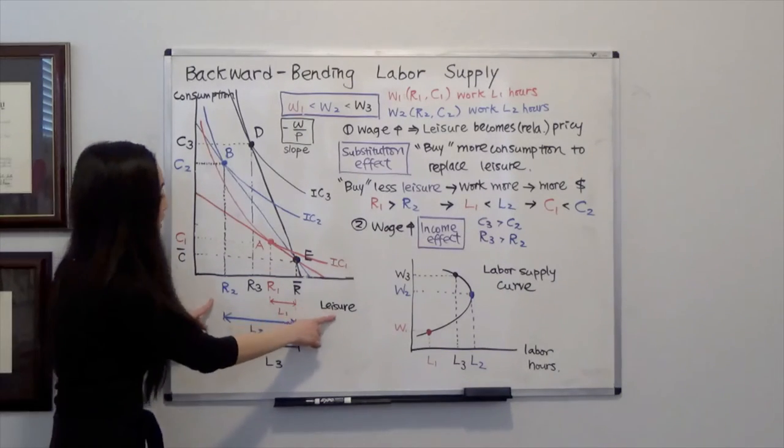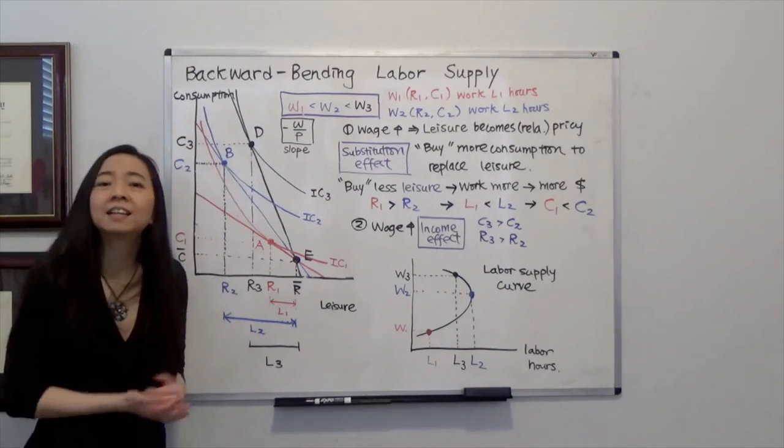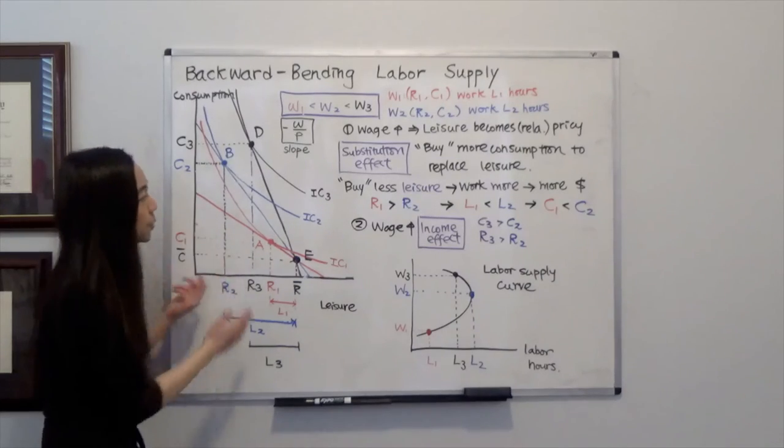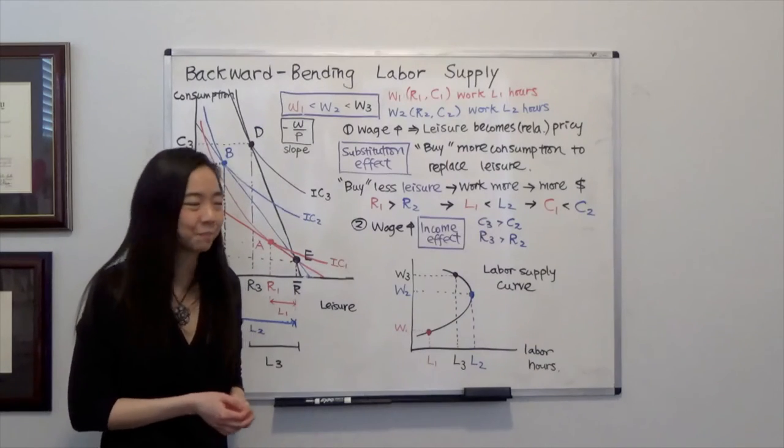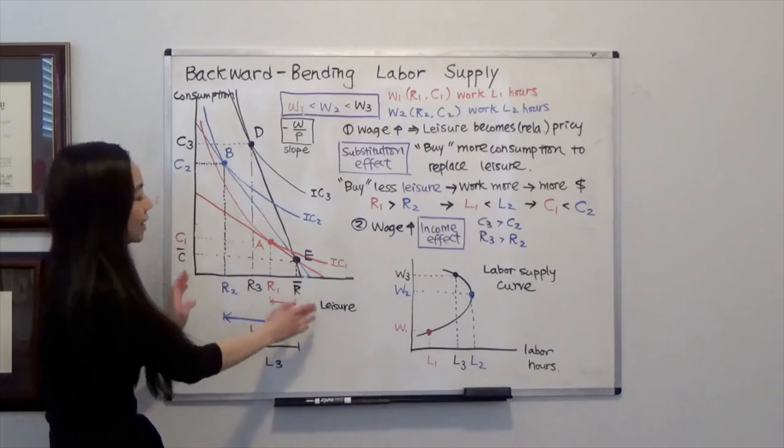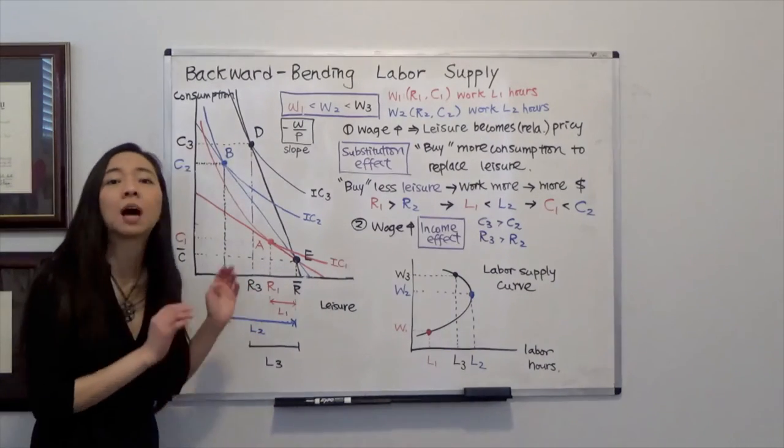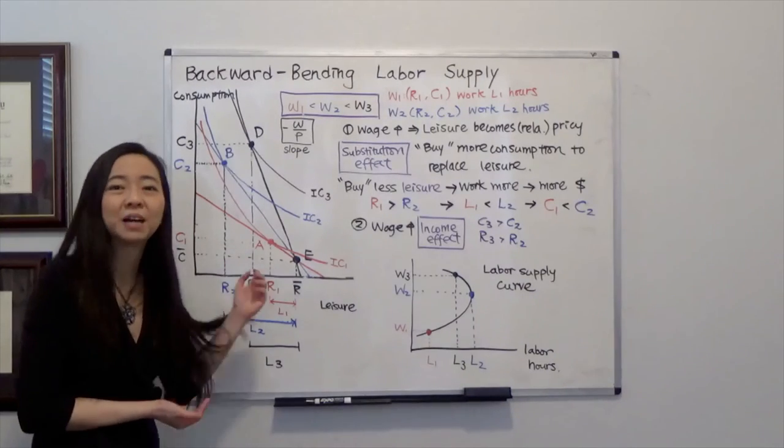Why is that? Because both leisure and consumption are the things that we like. And at this point, when our wage goes up to W3, income effect is going to kick in. And therefore, you say, I like leisure, I like consumption. So, I'm going to consume both of them a little bit more than before.